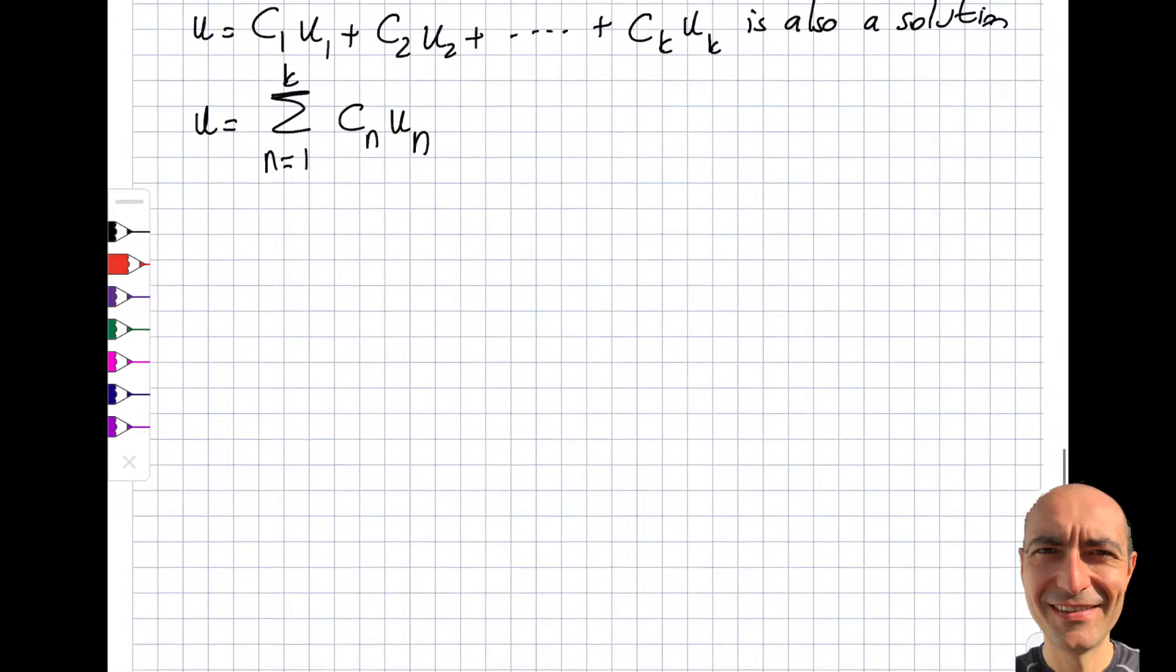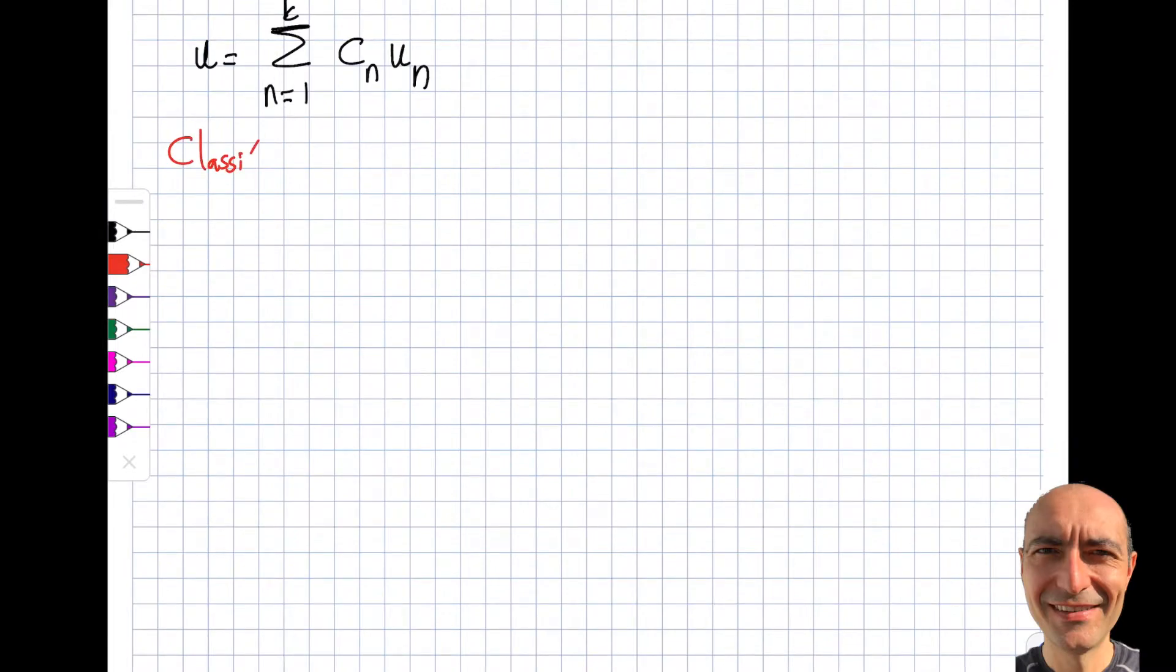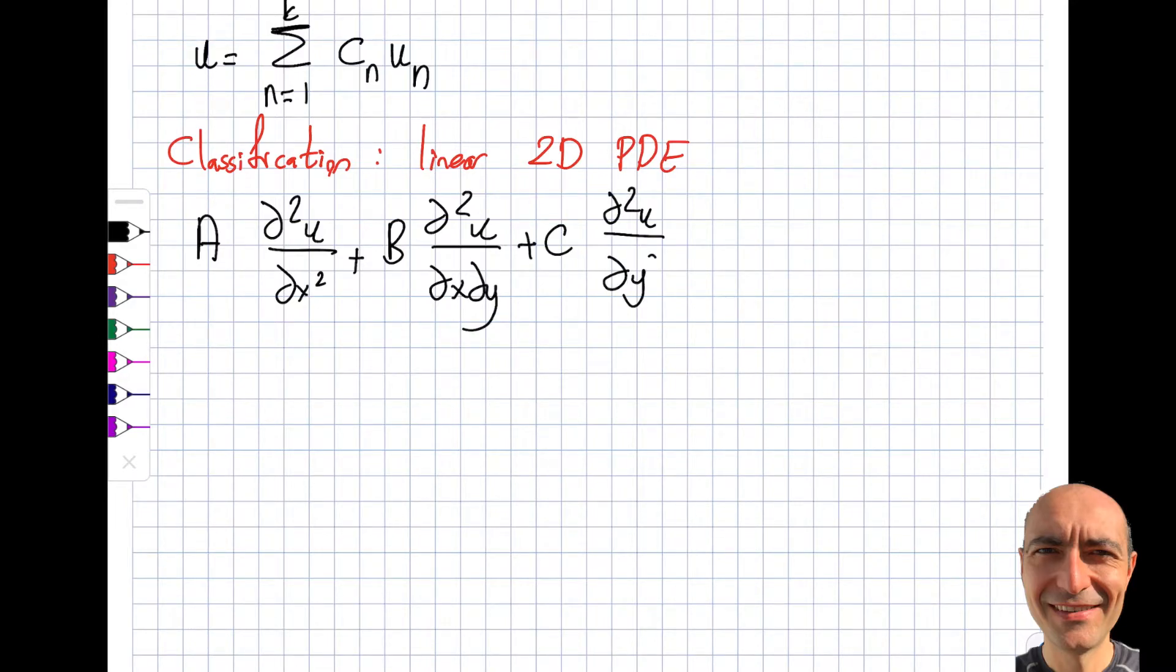The next thing I want to talk about is the classification. This is a little bit more involved. Let's look at the classification of PDEs. It's a little bit different than ODEs. Linear second-order PDE: A*(∂²u/∂x²) + B*(∂²u/∂x∂y) + C*(∂²u/∂y²) + D*(∂u/∂x) + E*(∂u/∂y) plus F*u equals G.